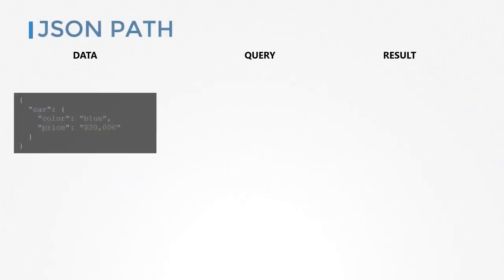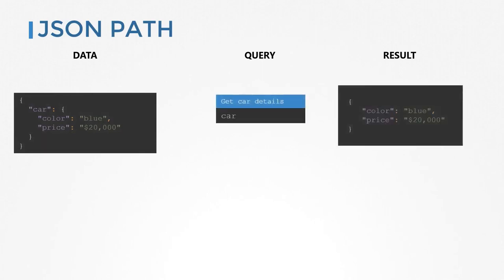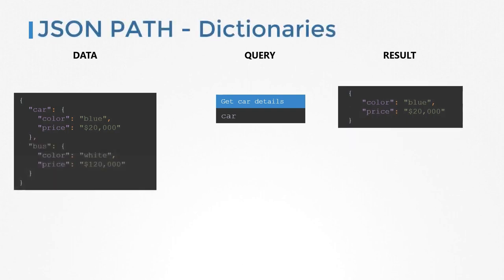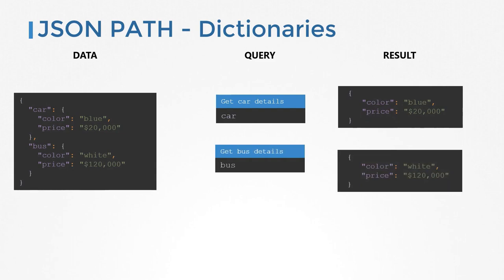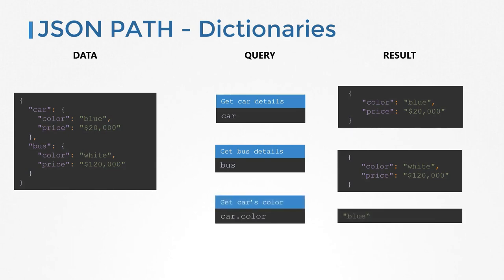Similarly, in the JSON world, JSON path is a query language that when applied to a given JSON dataset gets you results that are a subset of that data. For example, in data representing the color and price of a car, use the query 'car' to get the color and price of it. If we have information about a bus as well, use the query 'bus' to retrieve bus details. To get only specific fields — say the color of the car — use the query 'car.color'. The dot notation helps you select a particular field within a dictionary.